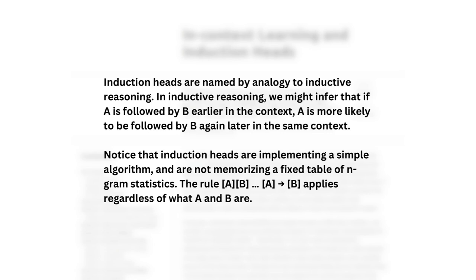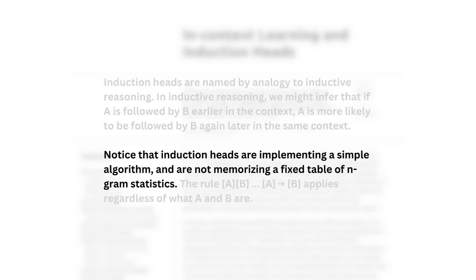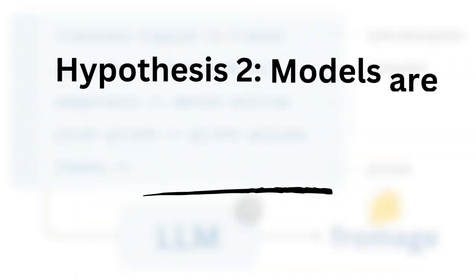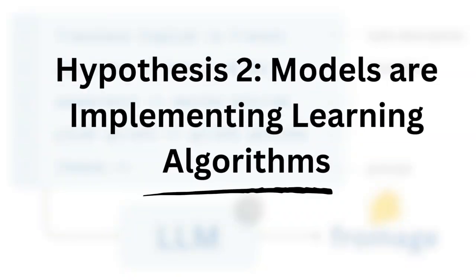Notice that induction heads are implementing a simple algorithm and are not memorizing a fixed table of n-gram statistics. The rule A, B, dot dot dot, A, then B applies regardless of what A and B are. The important part is that after studying this induction head, the author realized that the model was implicitly implementing some type of algorithm, or at least using them, which is intimately connected to the second hypothesis.